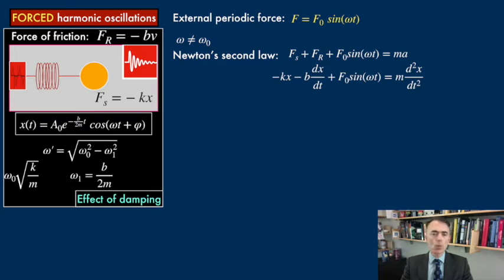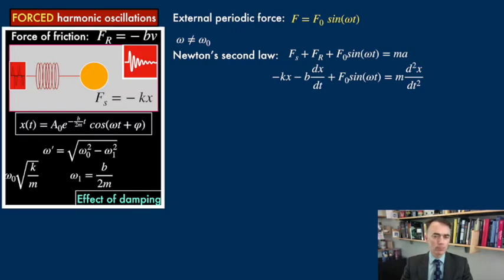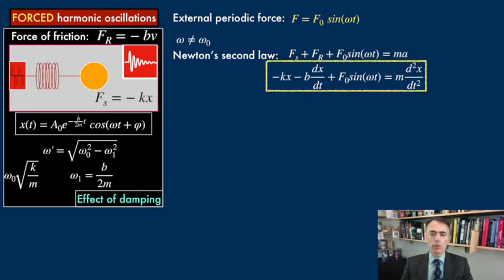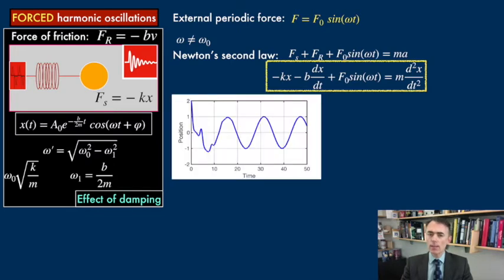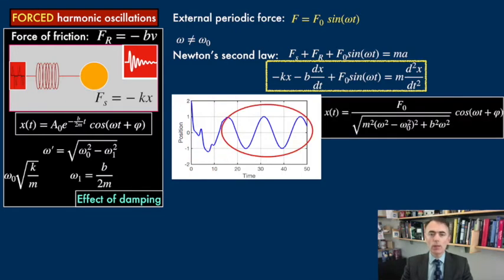We already saw the effect of the interaction between the spring and the damping from friction. The solution to this equation is interesting now, as it has a transient chaotic behavior. This transient chaotic motion fades away after a while, and after that it performs a periodic motion with frequency omega.